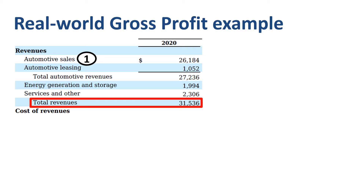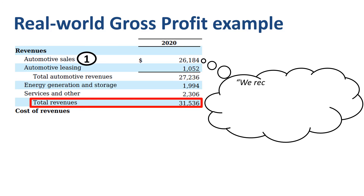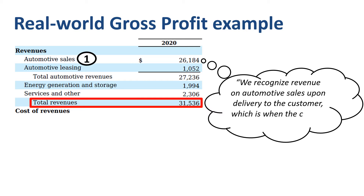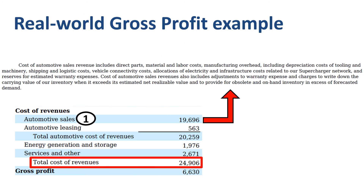Let's review the first and biggest of those lines. Here's how automotive sales revenue gets recorded: revenue is recognized upon delivery to the customer, which is when control of a vehicle transfers. The corresponding cost of automotive sales revenue includes direct parts, material, labor costs, depreciation of tooling and machinery, shipping and logistic costs, warranty expenses, and inventory obsolescence charges — that's what it takes to build and deliver the car that they sold.